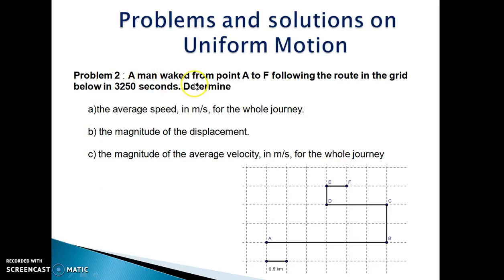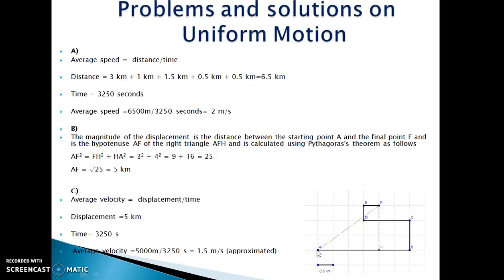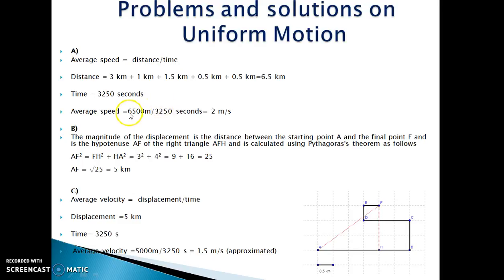Let's see another example. A man walked from A to F following a route in the grid below in 3,250 seconds. We are interested to find the average speed, magnitude of displacement, and magnitude of average velocity. The total distance covered by the man moving from A to F is the sum of distances A to H, H to B, B to C, C to D, D to E, and E to F, which equals 6.5 km. Total time taken is 3,250 seconds. Average speed is given by distance upon time, which comes out to be 2 meters per second.